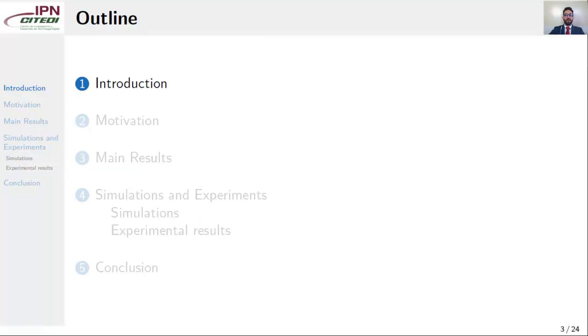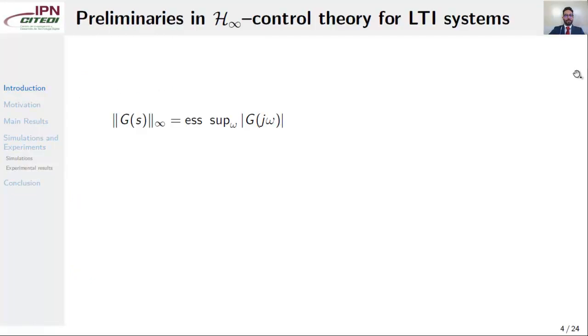Let us start with the introduction. Some preliminaries in H-Infinity Control Theory for linear time invariant systems are given. Here we have the H-Infinity norm of a transfer function G. For instance, consider a second-order system defined as we can see here, where omega_n is the natural frequency and zeta is the damping ratio, s is the complex variable.